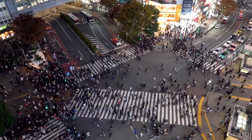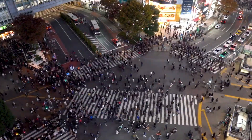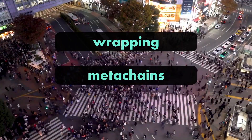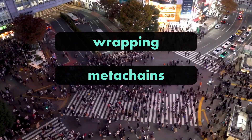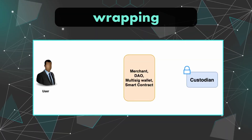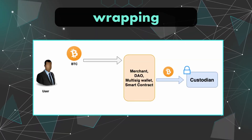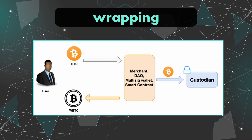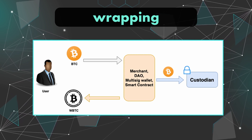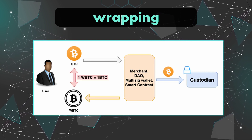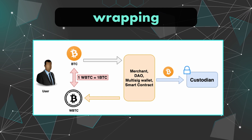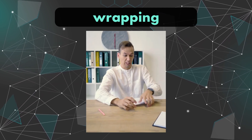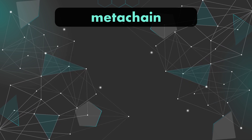Cross-chain can be done in a few different ways, but essentially the evolution has gone from wrapping to using meta-chains to low-level protocols. With wrapping, what happens is that you lock your token in custody on one blockchain, and a wrapped version is released on the other, with a one-to-one peg to the original token. But that's difficult to build, and major hacks happen like the Wormhole hack.